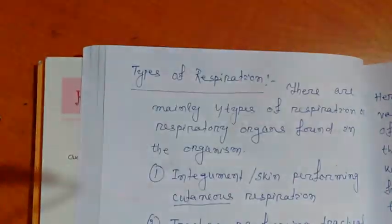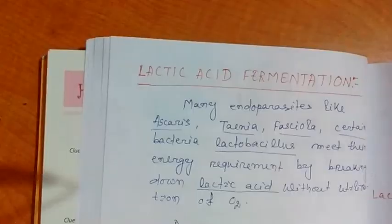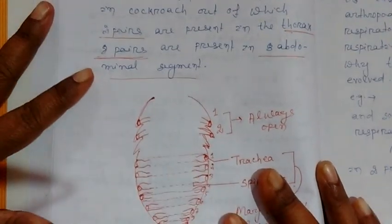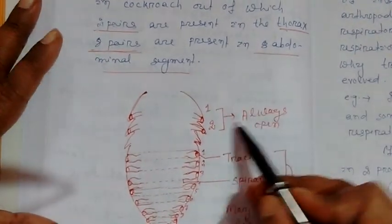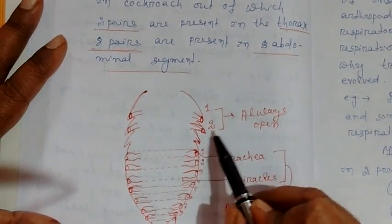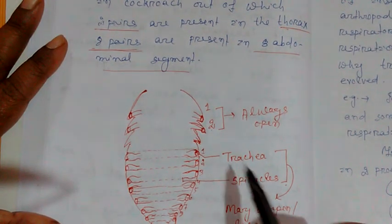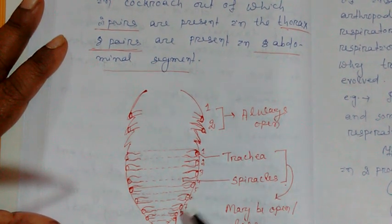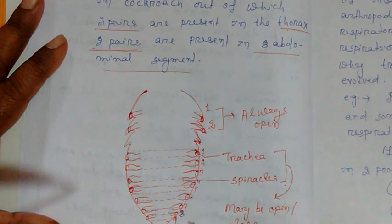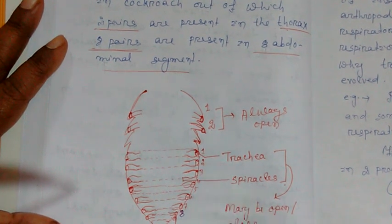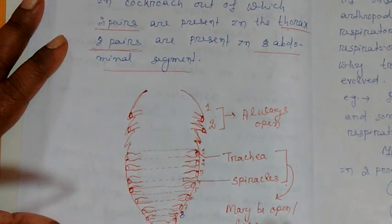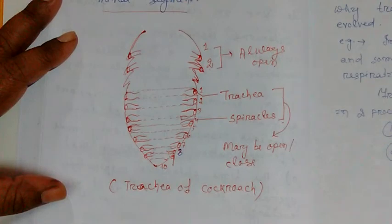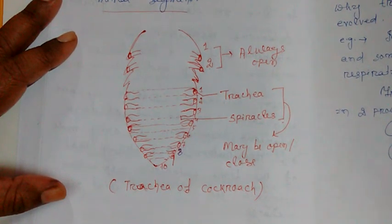As I showed in the diagram, the first and second spiracles in the thorax region always remain open. These eight spiracles — eight pairs — may be open or closed, meaning they only open during inspiration or intake of oxygen through the spiracles.